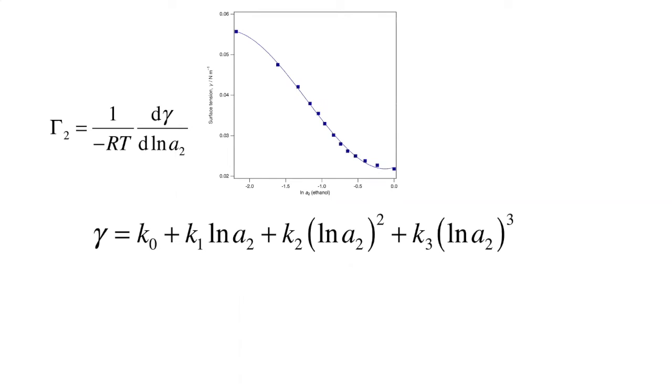Polynomials are great. It's easy to take the derivative. We can do that analytically. Let's take the derivative with respect to LNA2. The K0 term goes away. That highlights an advantage of using derivatives from experimental data, because if we had a constant offset K0, it wouldn't affect the quality of our results.